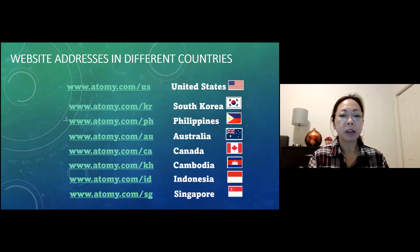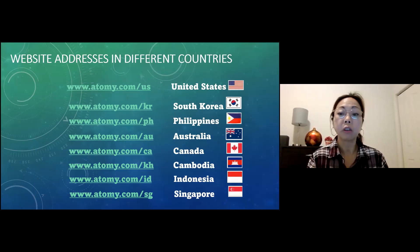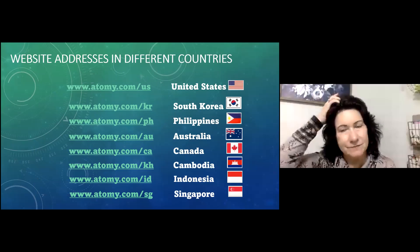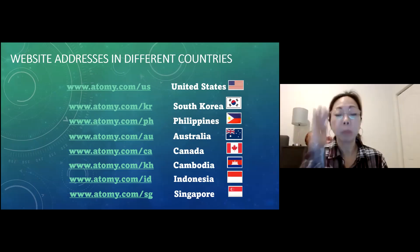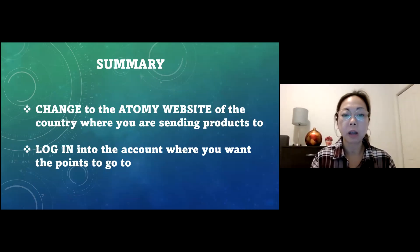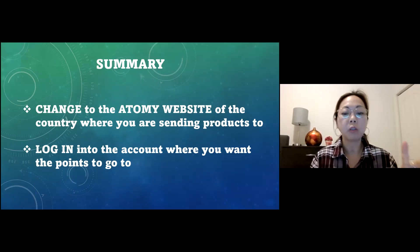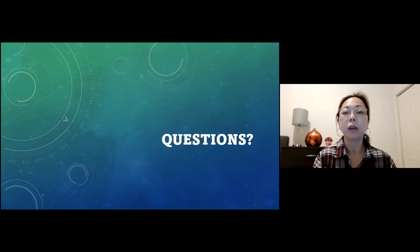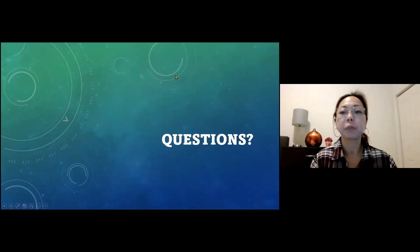Here are the direct addresses for different countries' Atomy websites — for example, atomy.com/ph for Philippines, atomy.com/ca for Canada. You don't have to memorize all the country codes though; the easiest way is to go to atomy.com/us and then switch using the country drop-down in the upper right corner.